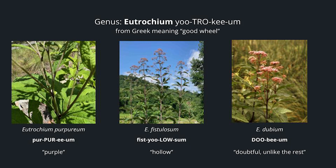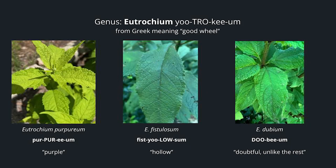Eutrochium — our Joe Pye weed — comes from the Greek meaning good wheel. A Eutrochium with purple stems would be Eutrochium purpureum. Eutrochium fistulosum has stems that are completely hollow. And then there's Eutrochium dubium, which means doubtful or unlike the rest. When you look at the leaves on Eutrochium dubium, you can see three distinct veins — one, two, three — and that's only present on that particular species.